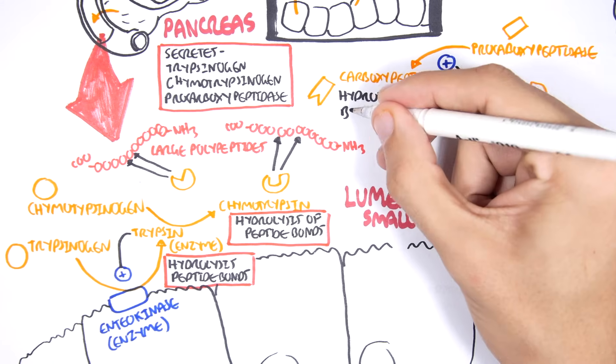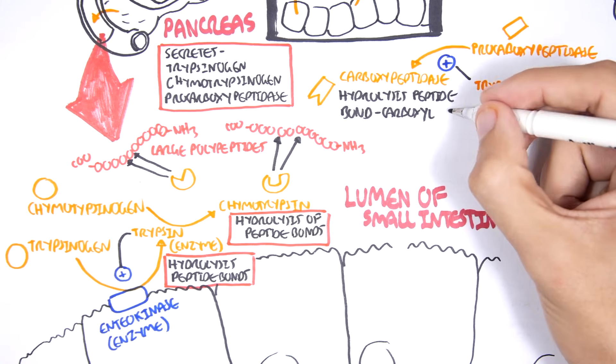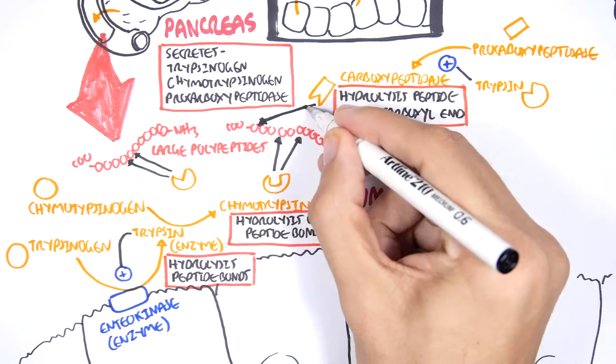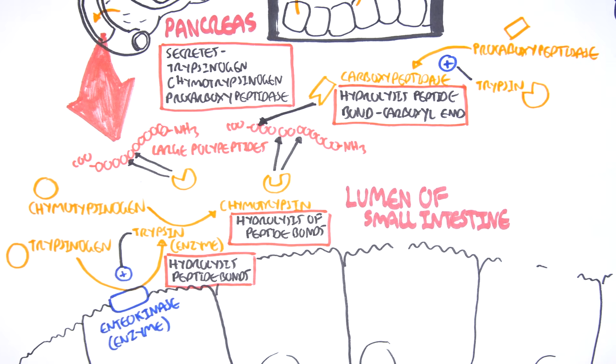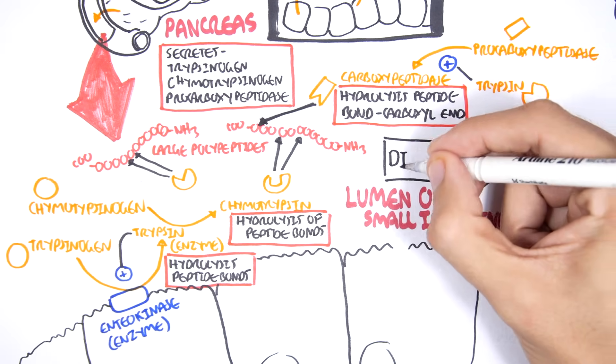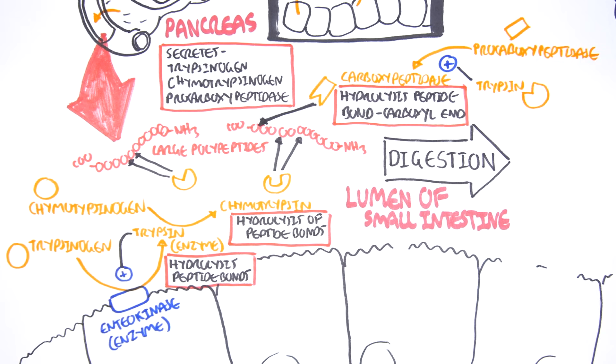Carboxypeptidase is an enzyme that hydrolyzes peptide bonds from the carboxyl end of the protein. You can remember this because the name of the enzyme, carboxypeptidase, is like carboxyl group, carboxyl N. After the large polypeptide encounters all these enzymes, the trypsin, the chymotrypsin, the carboxypeptidase, these large polypeptides will be further digested to small polypeptides as well as di- or tripeptides.